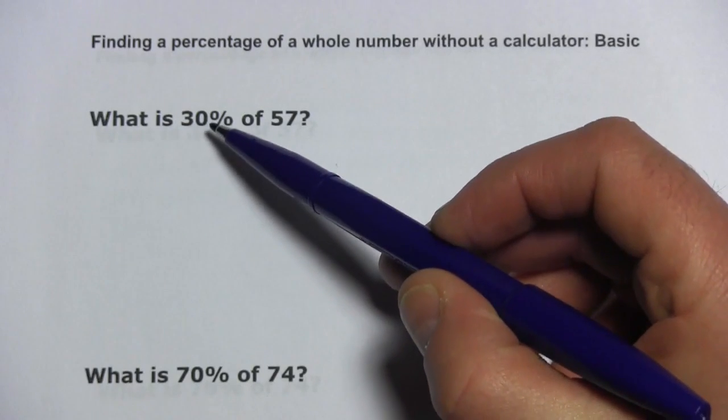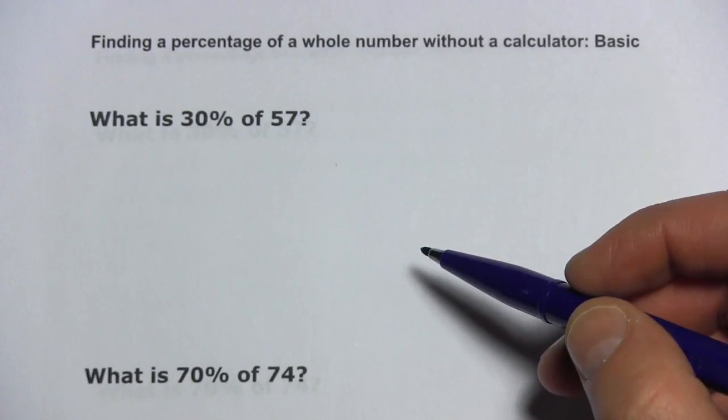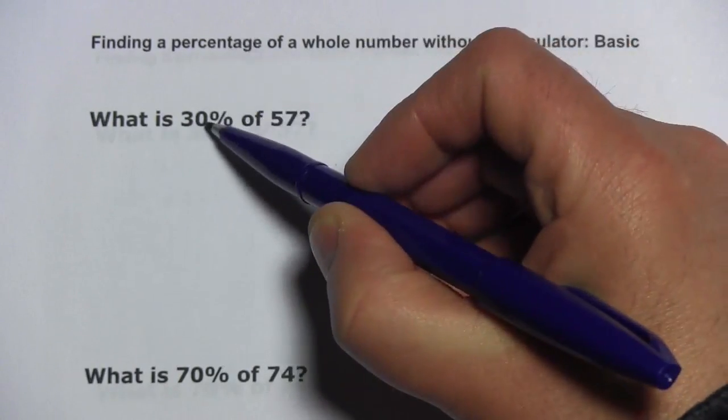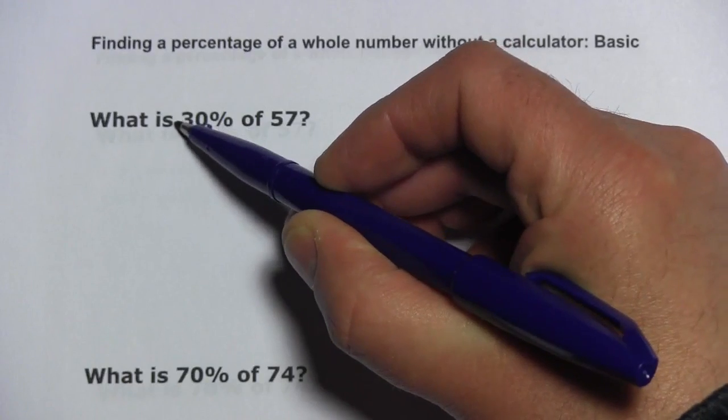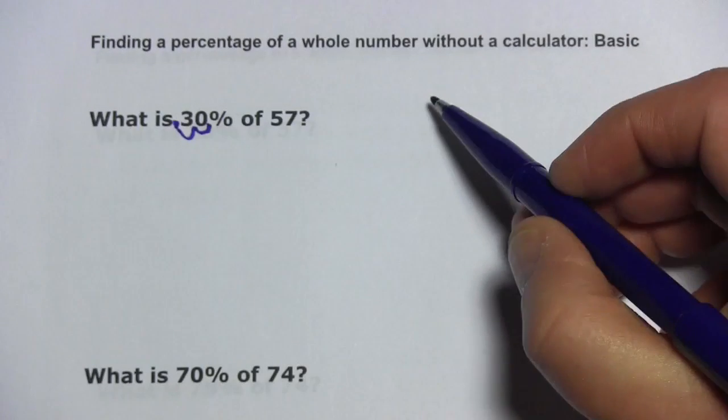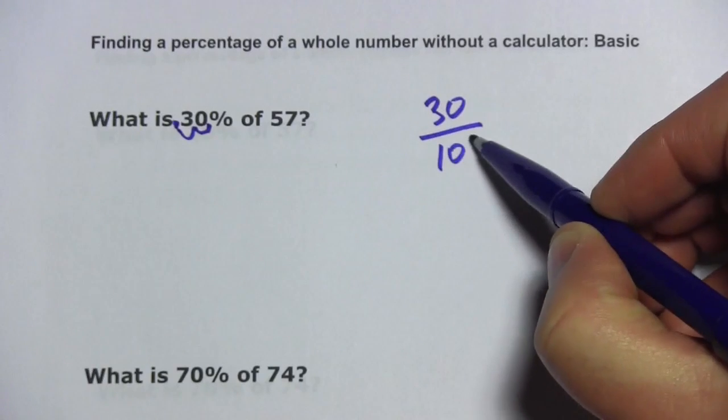Before you multiply, you have to convert the percent to a decimal. And when you convert a percentage to a decimal, you are moving the decimal point two places. Really, you should think of it—30% is like 30 out of 100.